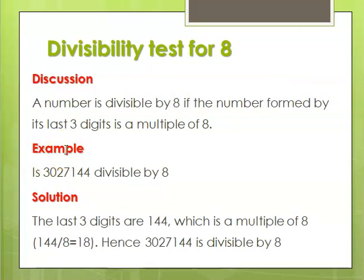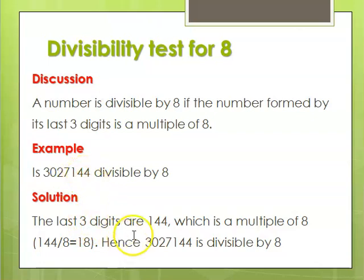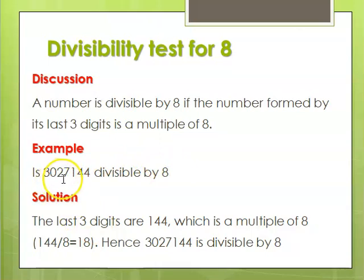A number is divisible by 8 if the number formed by its last three digits is a multiple of 8. We look at the last three digits and check if the number they form is a multiple of 8. For example, 3,027,144 — is this divisible by 8? The last three digits are 144. If you divide 144 by 8, it goes 18 times. Clearly, 144 is a multiple of 8, and therefore 3,027,144 is divisible by 8.